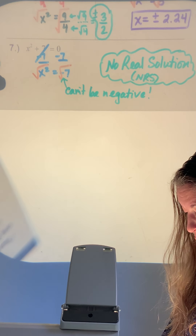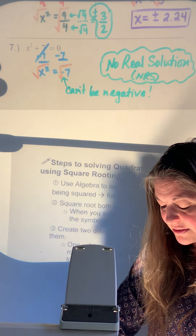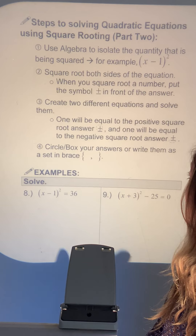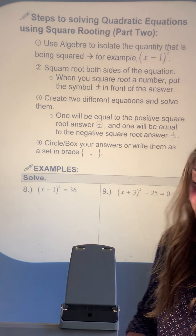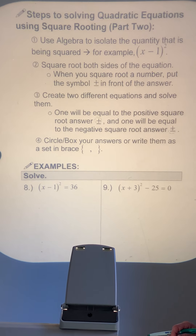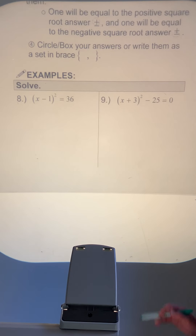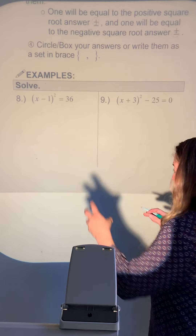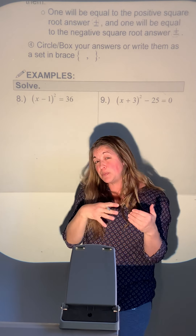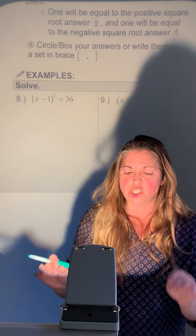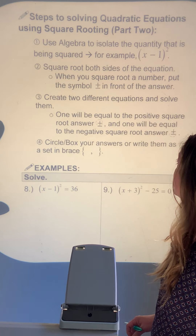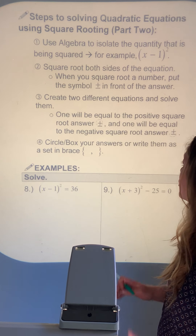We've got two more problems that look a little different, so I've created another set of steps for you to write down. Notice that instead of x being squared directly, x is part of a complete quantity that's being squared. We're going to adjust our steps a little.